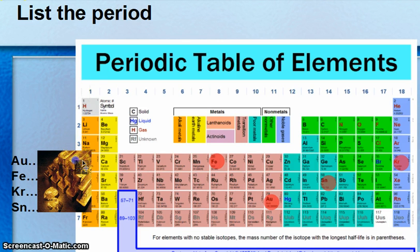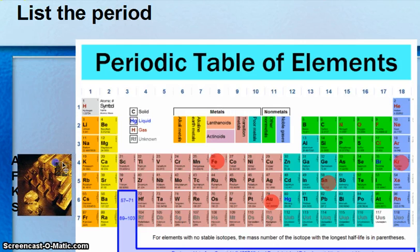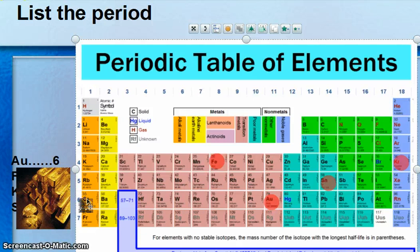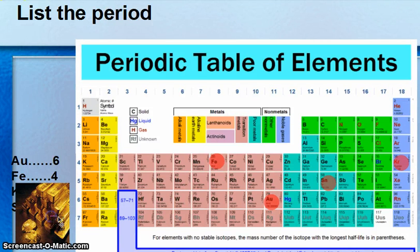Let me move this out of the way here. Okay, so for gold, you can see gold, the period is six because there's gold. And it's in row six.